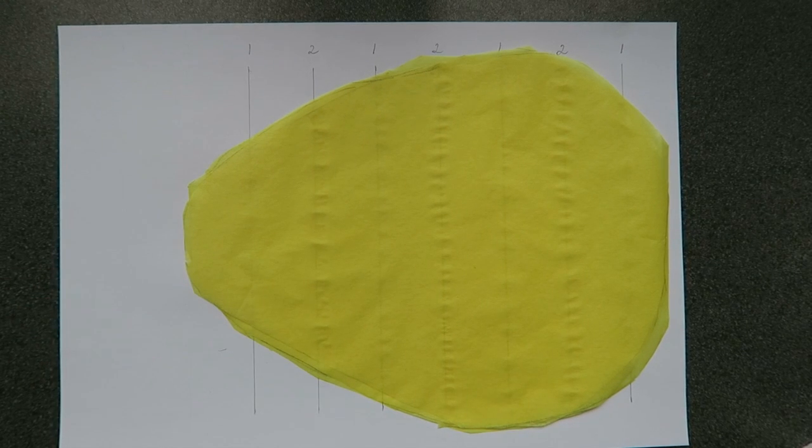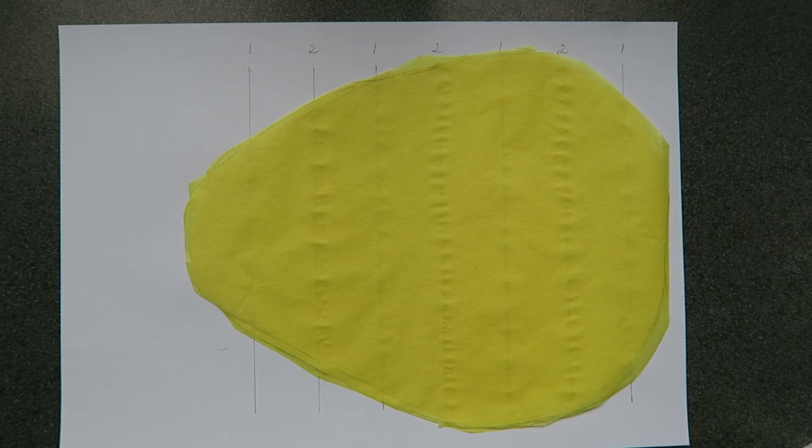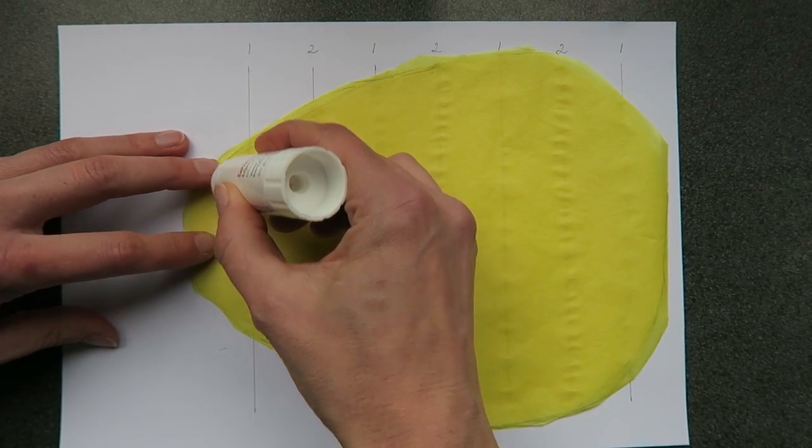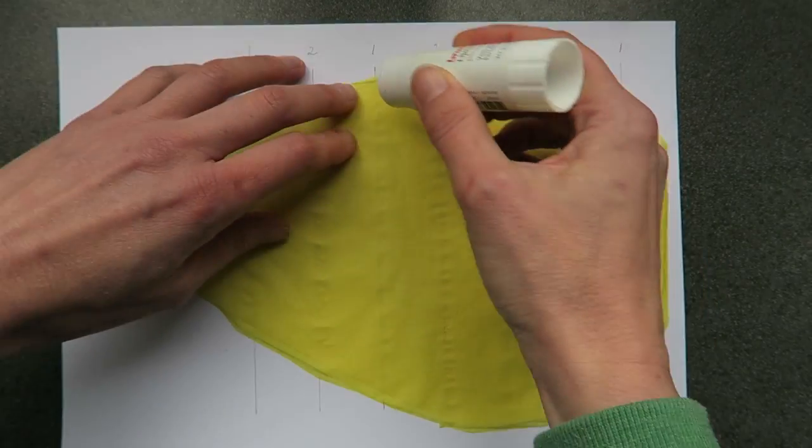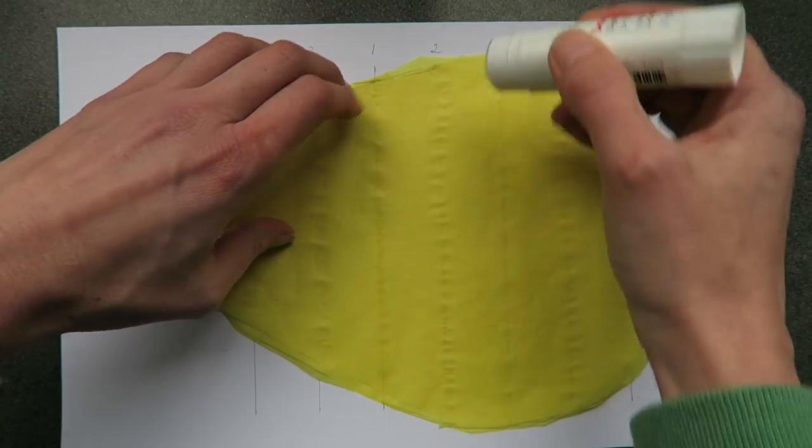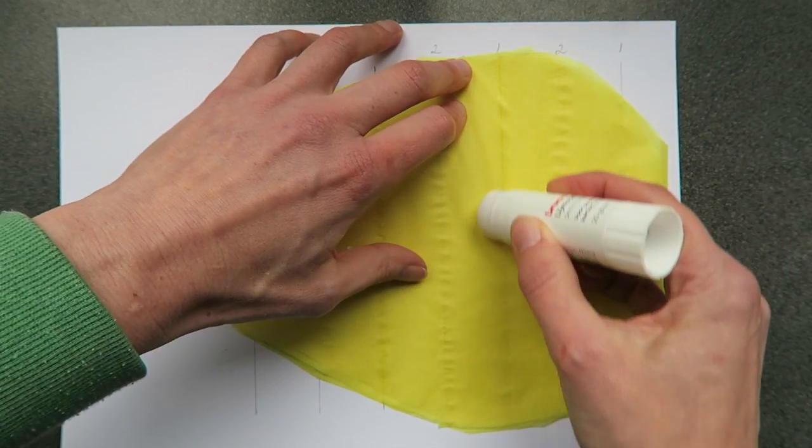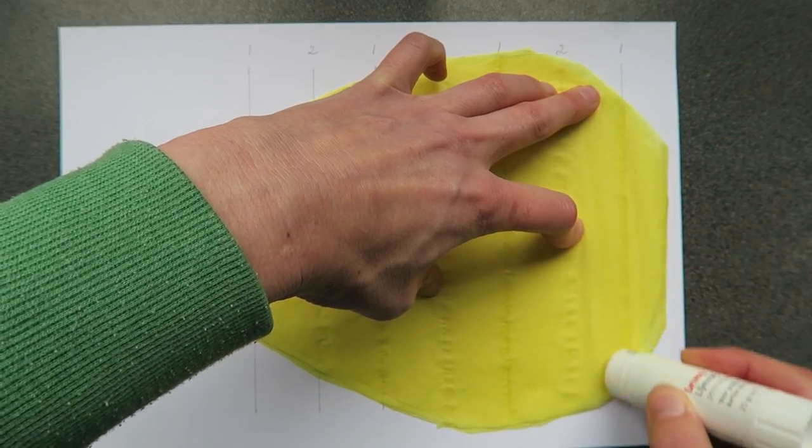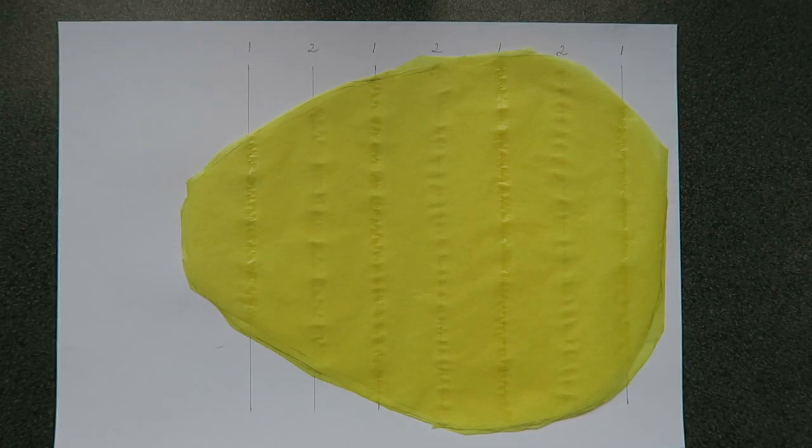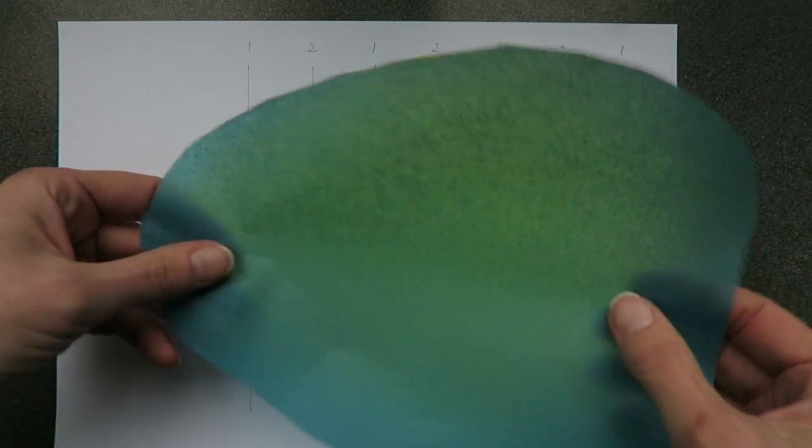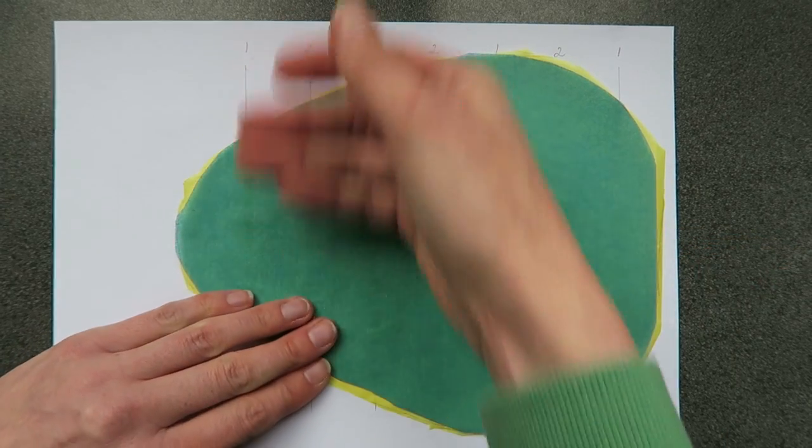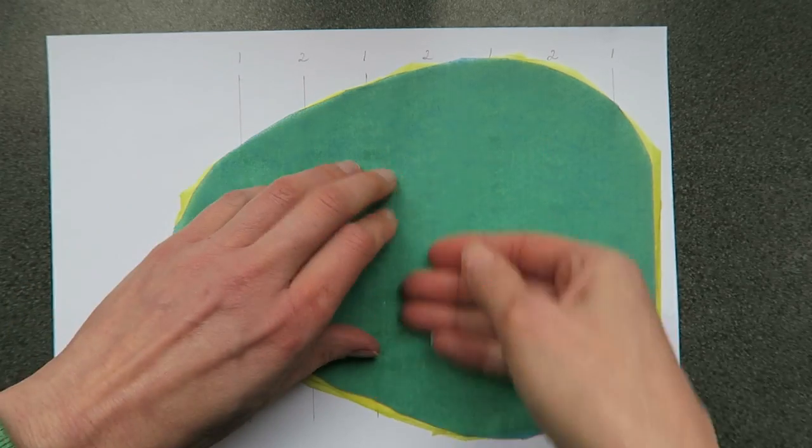And now you have to go on and on. That was 2, and now you have to put glue on lines 1, and so on, 2, 1. I will use 20 pieces of paper, but you can use more if you want. I want to create lines in my Easter egg, so I will use different colors.